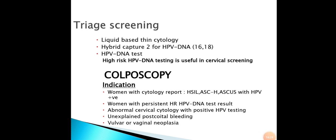Colposcopy uses a magnifying device with light to examine abnormal lesions on the cervix. Indications include: cytology report of HSIL or ASC-H with positive HPV, women with persistent high-risk HPV DNA test results, abnormal cervical cytology with positive HPV testing, unexplained post-coital bleeding, and vulvar or vaginal neoplasia.